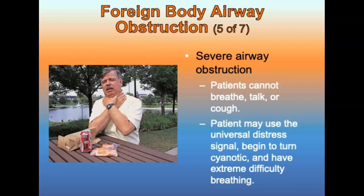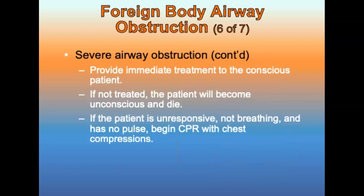With a severe airway obstruction, patients cannot breathe, talk, or cough. The patient may clutch their throat — the universal distress sign — and begin to turn cyanotic with extreme difficulty breathing. There is little or no air movement. Ask the conscious patient, 'Are you choking?' and if they nod yes, provide immediate treatment. If the obstruction is not cleared quickly, the oxygen level in the patient's blood will decrease dramatically, and the patient will become unconscious.